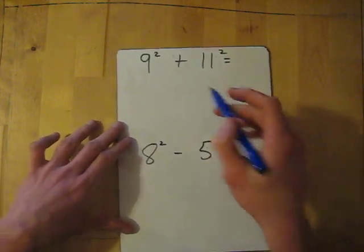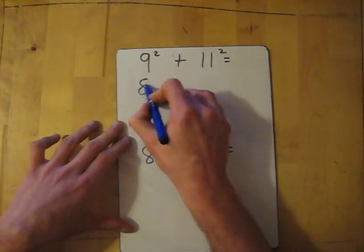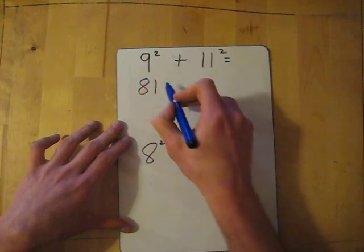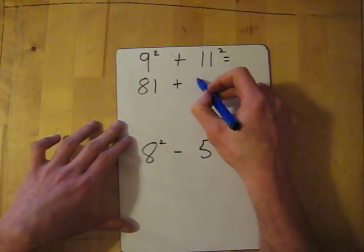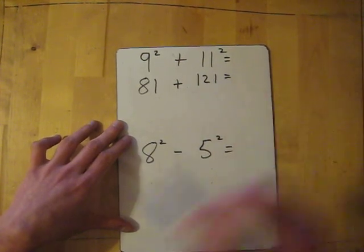So we've got 9 squared which is 81, so 9 times 9 is 81, add 11 squared. 11 times 11 is 121, and this one I'm actually going to use my column addition.